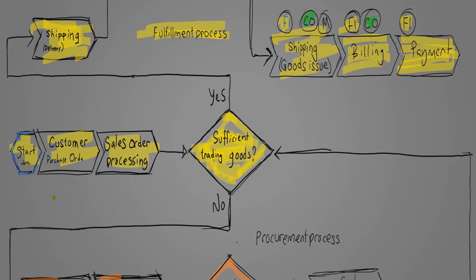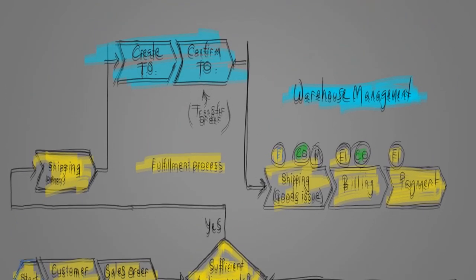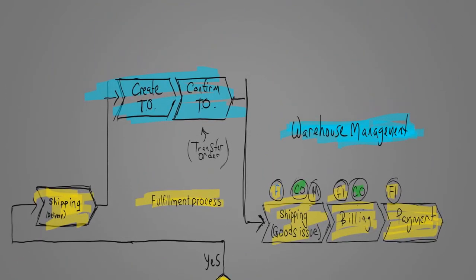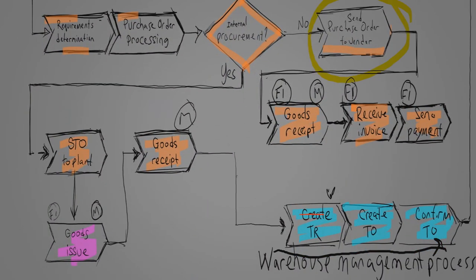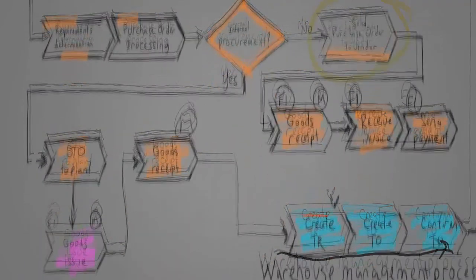Whenever a material moves, a stock transport order is generated to track the movements. When we procure the raw materials from external vendors, such as the wooden base of a mousetrap, when the goods are received and verified, we receive the invoice and send the payment. Also, warehouse management works in concert with procurement because when the goods are received, they're...